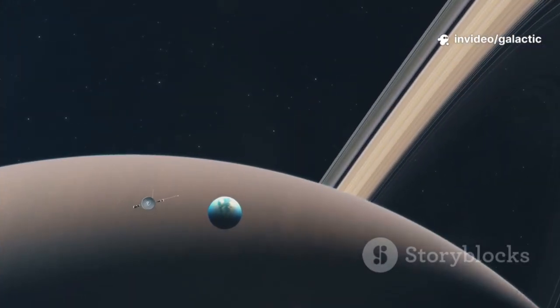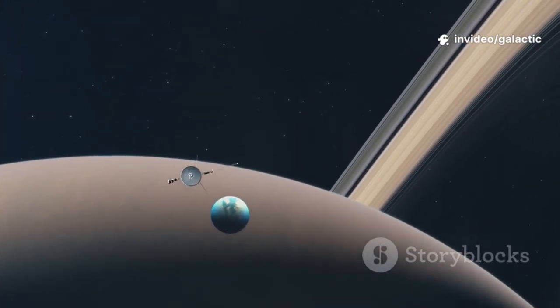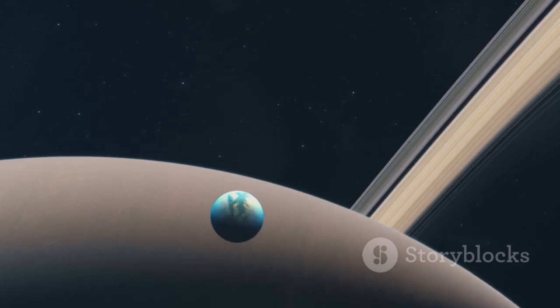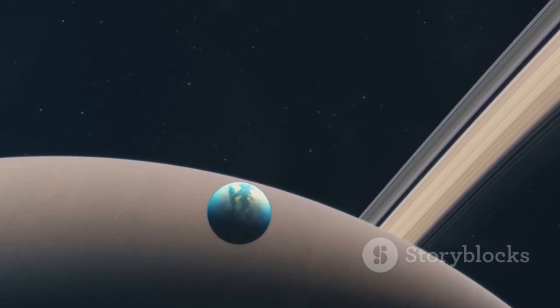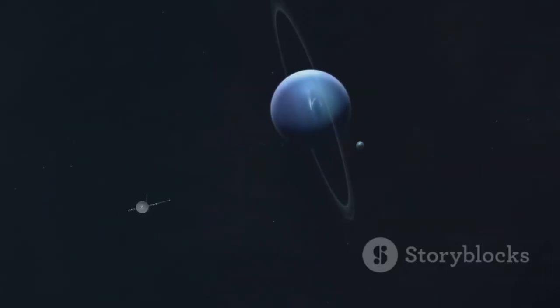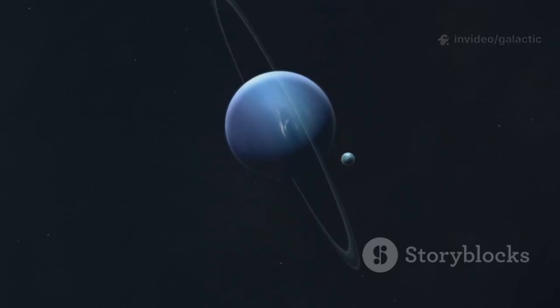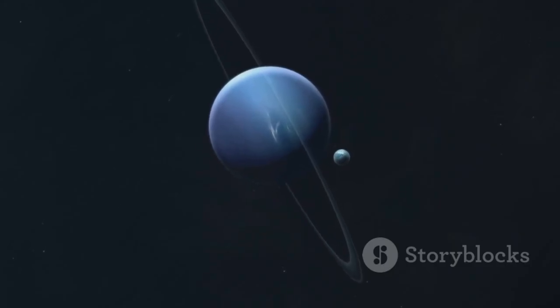The solar wind grows thin and weak out here. The charged particles that once streamed from the sun now barely touch Voyager as it drifts into the true emptiness between the stars. Each second it travels another ten miles, adding to a journey that has already covered more ground than we can truly comprehend. Its odyssey is measured not just in distance, but in the sheer audacity of its mission.